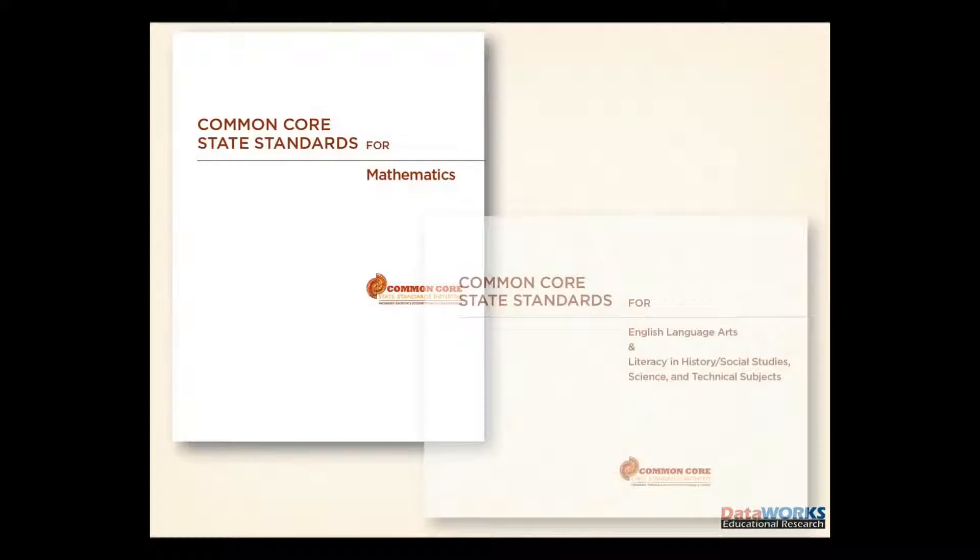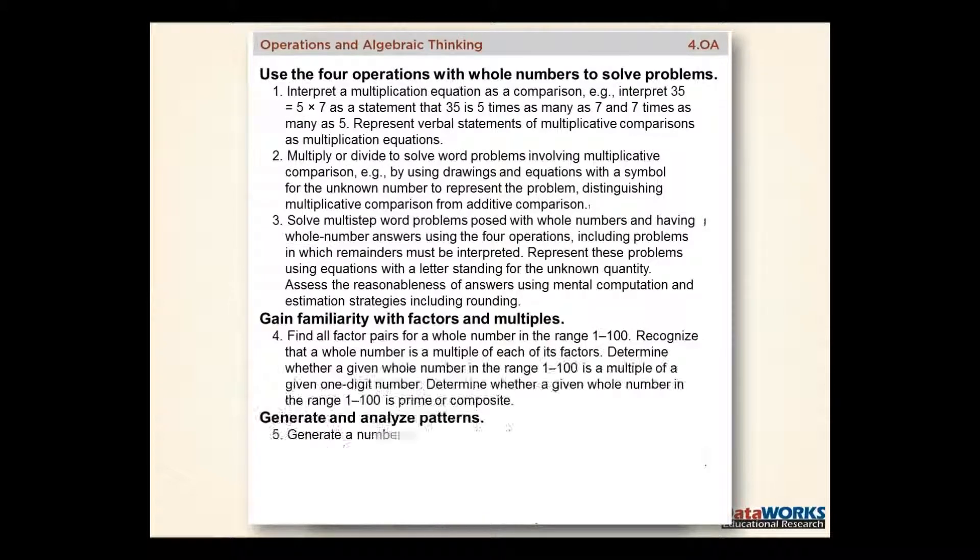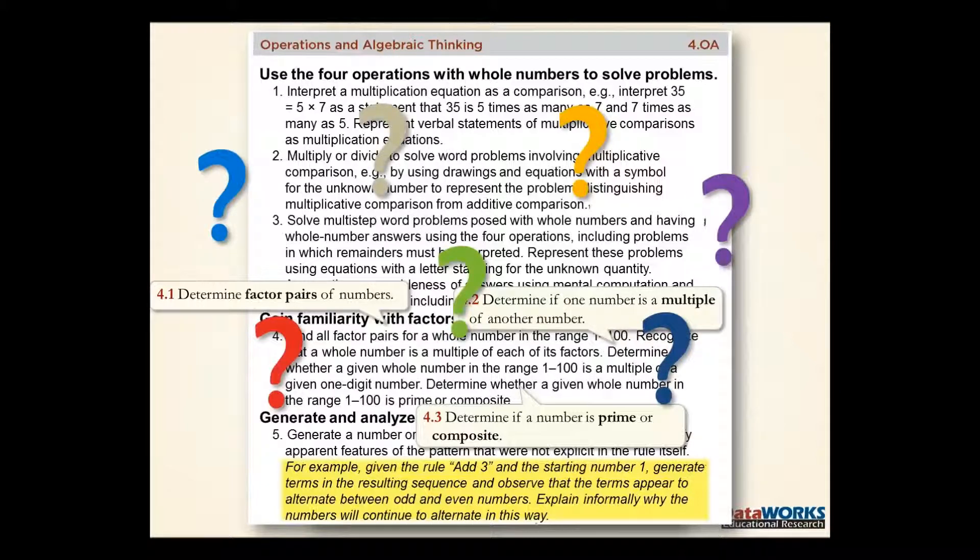Core standards indicate what students should know and be able to do by the end of the year. But the standards often include dense text, multiple objectives, a variety of examples and directions, and occasionally omit commonly understood labels that identify precise skills or content to be taught.